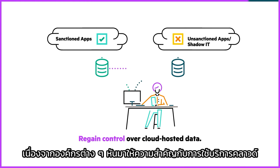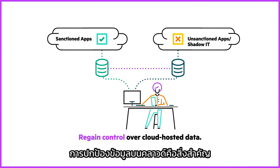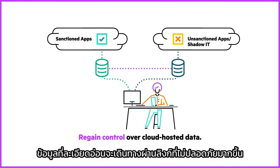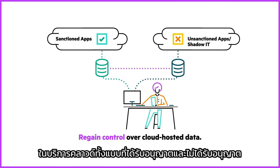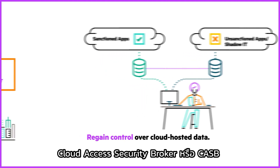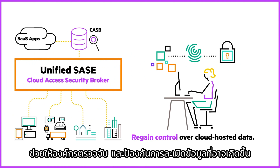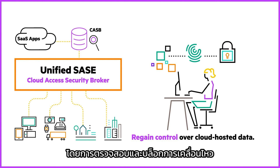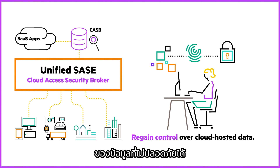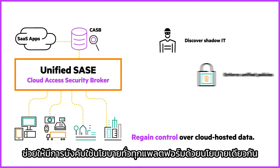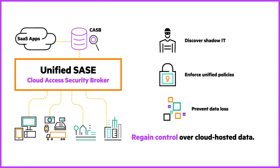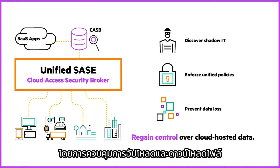As more organizations adopt cloud services, protecting cloud-based data is key. More sensitive data travels over unsecured links hosted outside the perimeter in sanctioned or unsanctioned cloud services. Cloud Access Security Broker, or CASB, lets organizations detect and prevent potential data breaches by monitoring and blocking unsafe data movements. It helps organizations discover shadow IT, enforce unified policies across platforms, and prevent data loss through controlled file uploads and downloads.